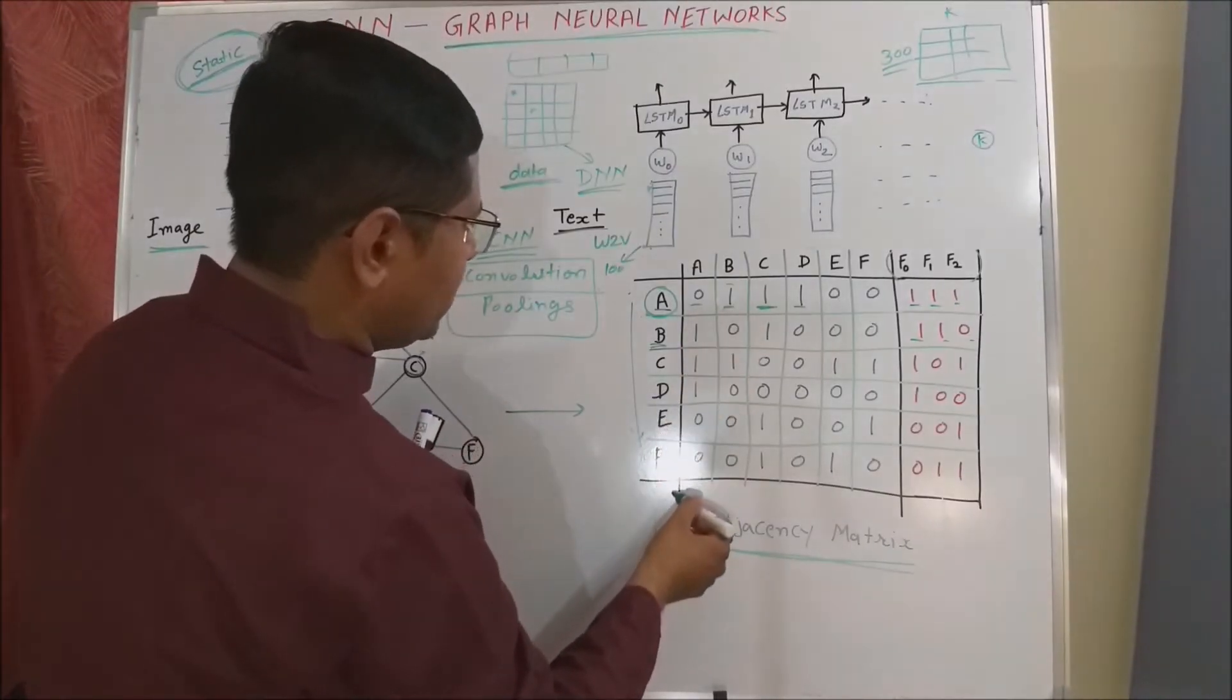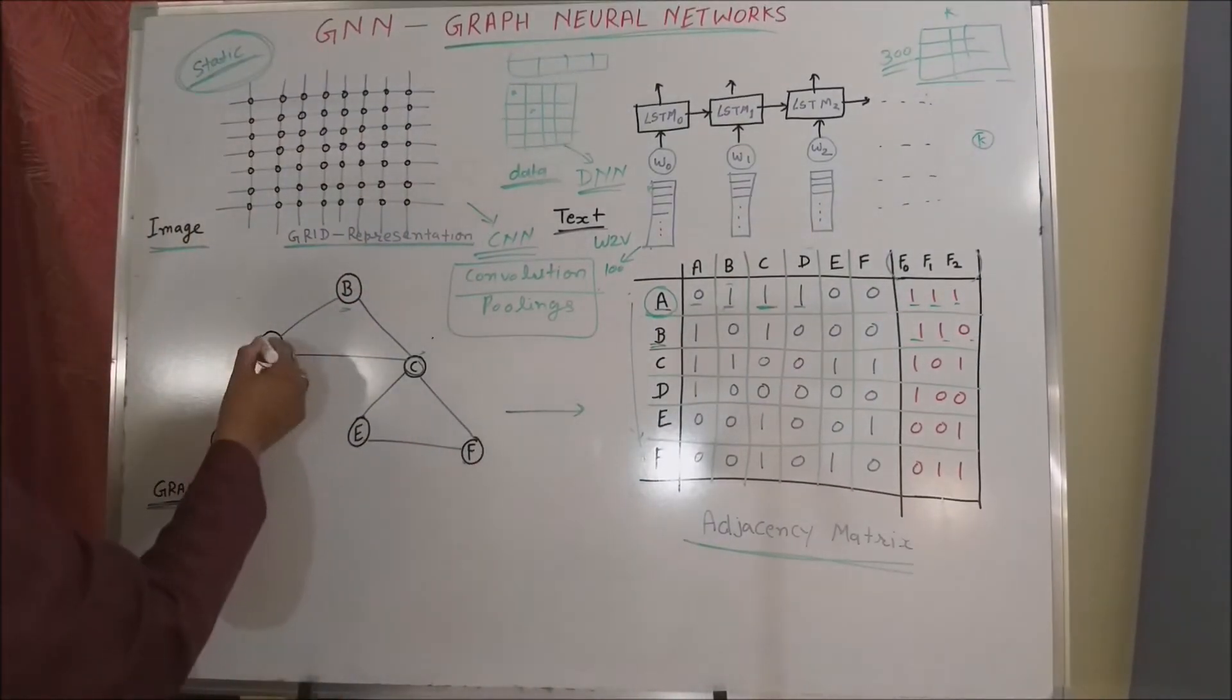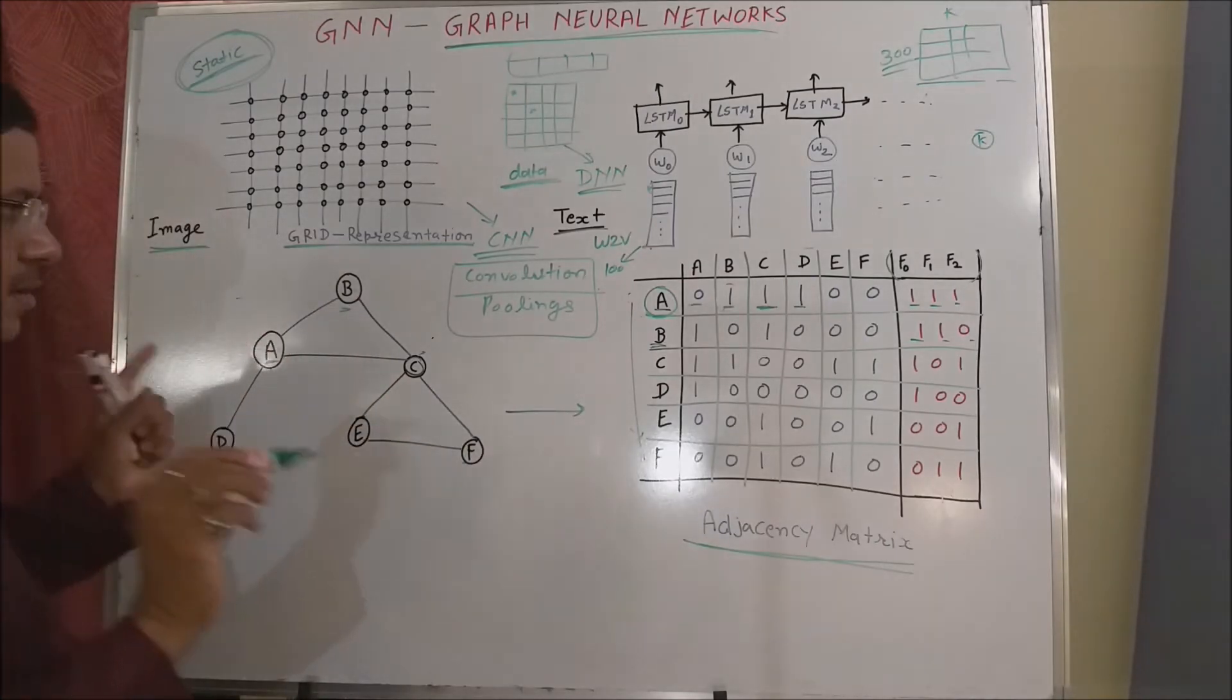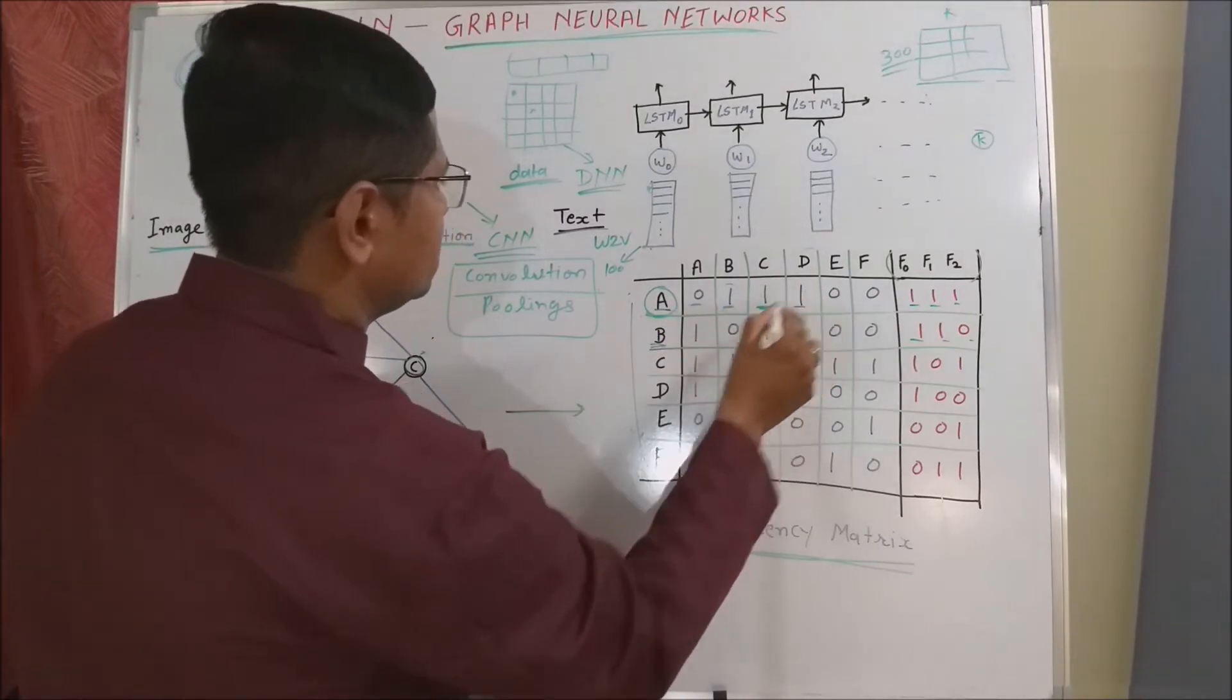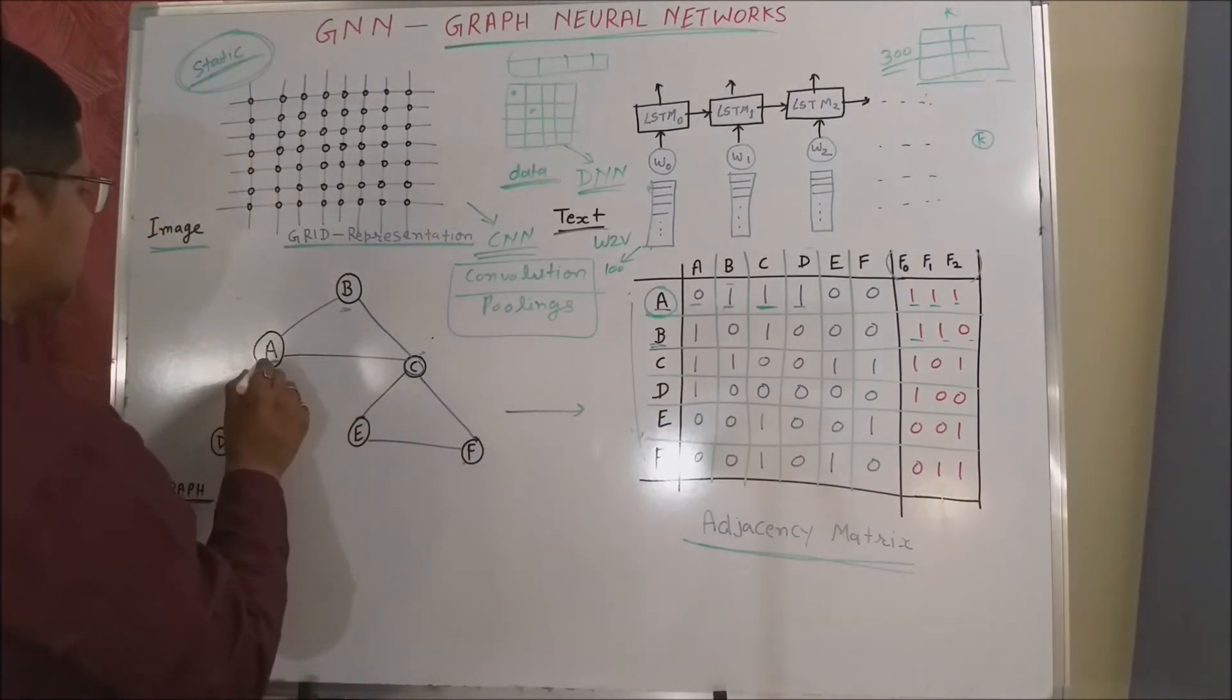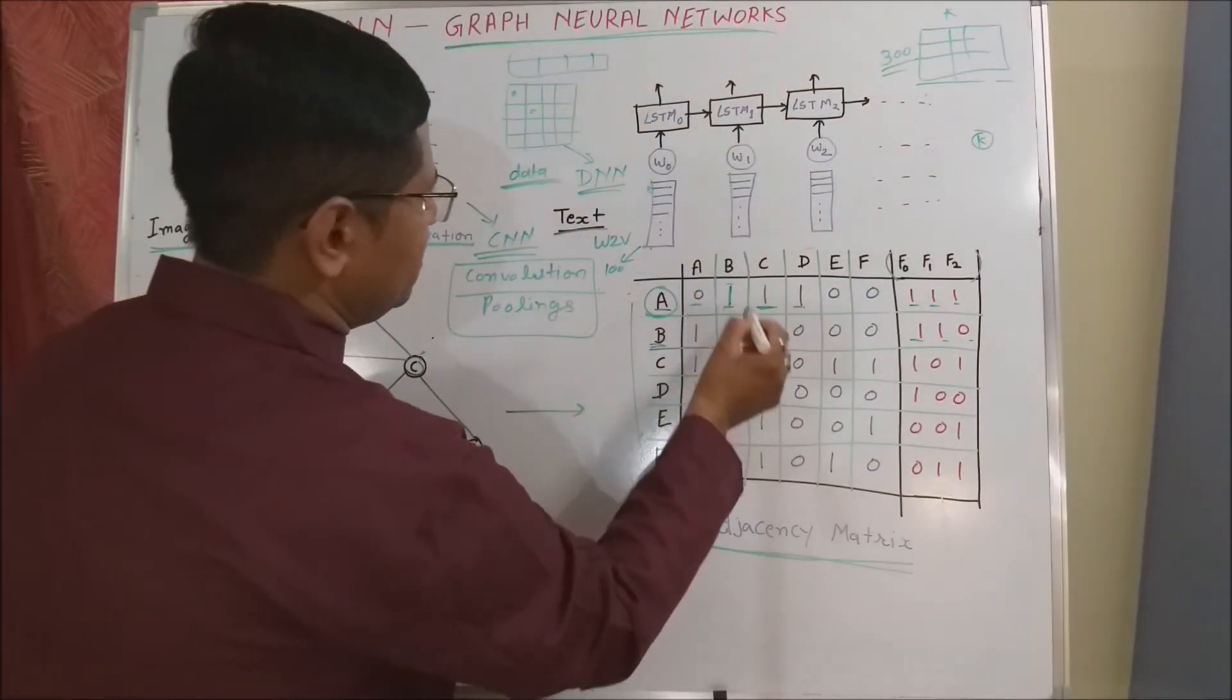Here, we have used the ordered numbering of nodes, a, b, c, d, e, f, like that. And then we try to understand that what are the connected nodes or edges. Then we say that there are edges between a and b, a and c, and a and d. We use one for a and c, we use one for a and d, and for the rest of them we use the number zero.